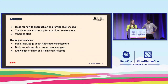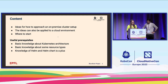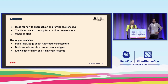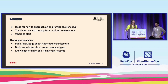About our presentation: we want to give you some ideas for how to approach an on-premise cluster setup, and these ideas can also be applied to a cloud environment. It's more intended as giving you some pointers to start, and some of our slides have a lot of text so you should be able to use them as a reference after this talk. Some useful prerequisites, since this is the 101 track: basic knowledge about Kubernetes architecture, basic knowledge about some resource types, and some knowledge of Helm and Helm charts is a plus — but if you haven't learned about this yet, you can always come back to our presentation later as a recording.